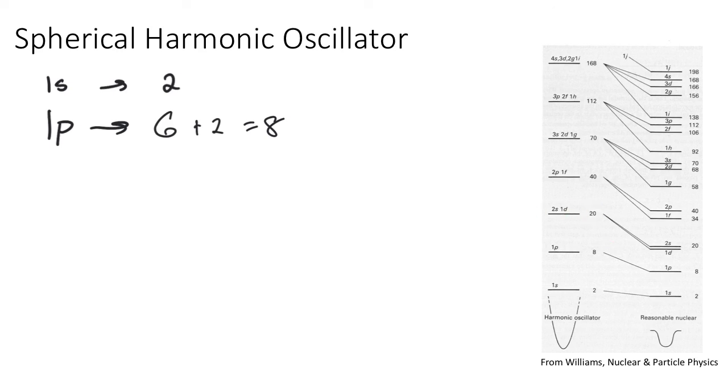For example, we have 20, which is, so when we have 1d and 2s, we have the 1d state, there's 5 d L values, m values for L=2, and then times 2 for up and down, we'll get 10 from that, plus 2 from the 2s state. And then plus the 6 plus the 2 from the previous states, and we get a total of 20.